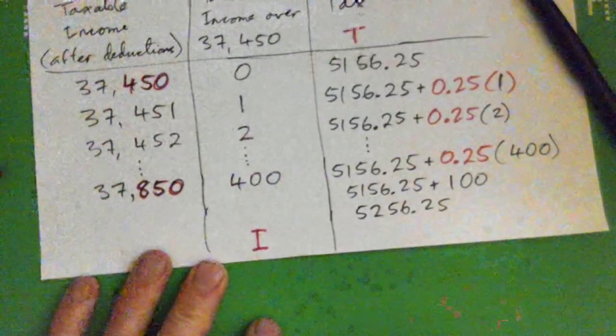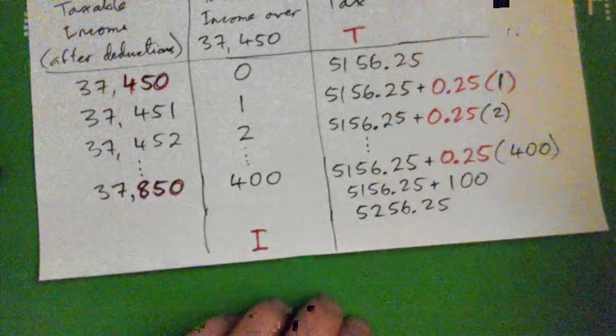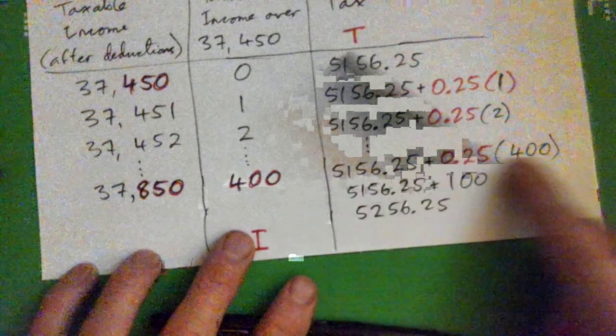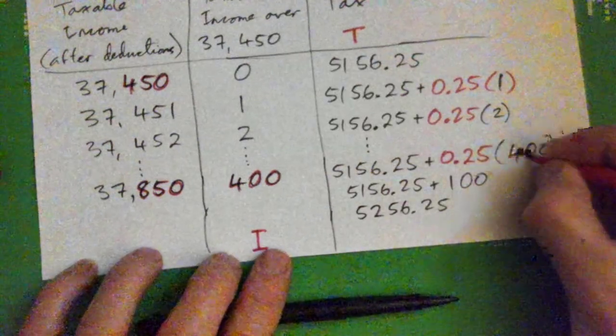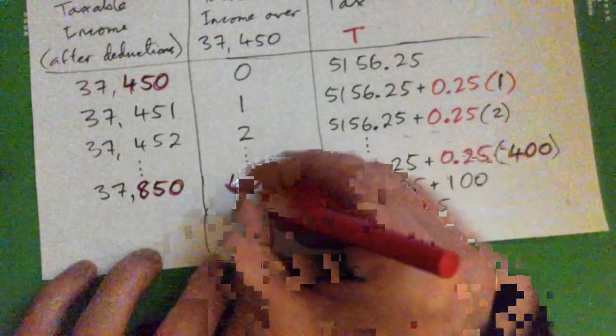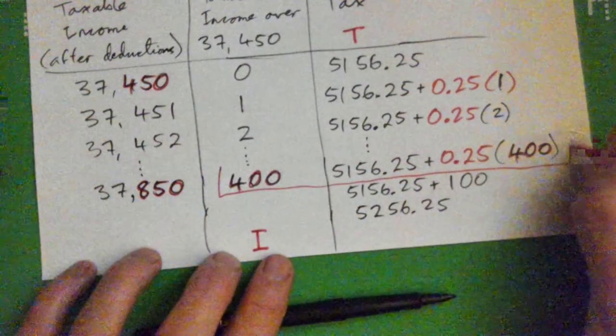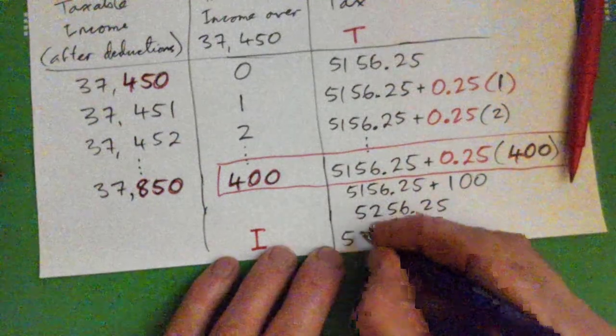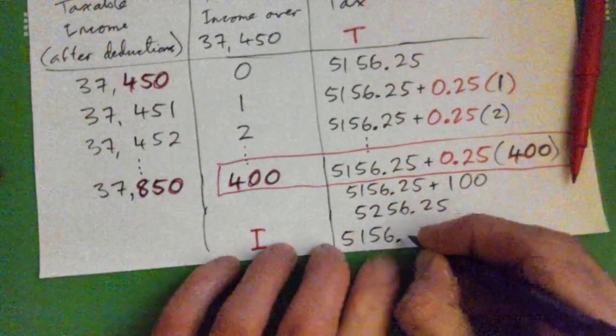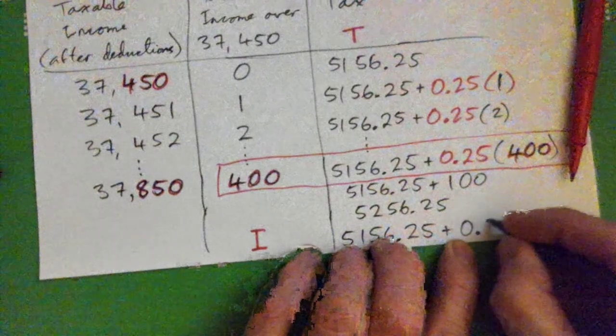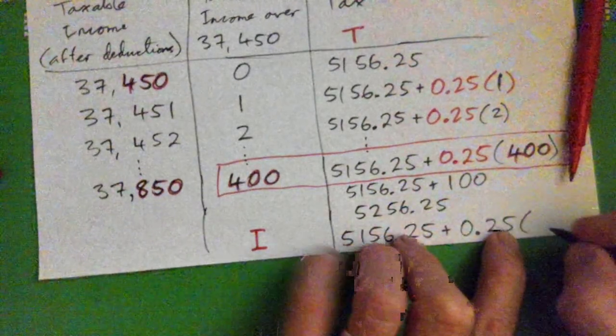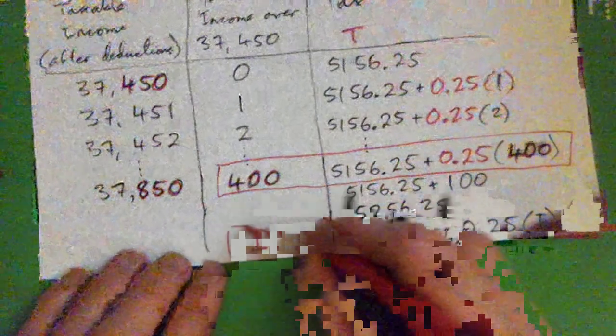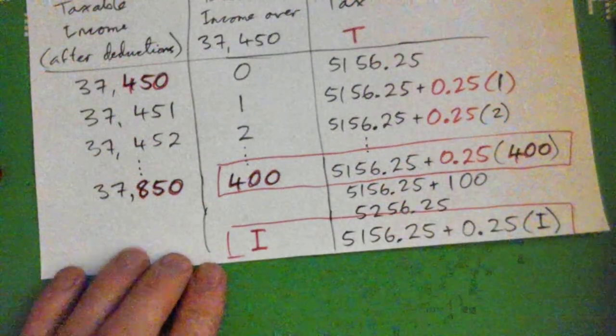They want us to come up with a formula. Remember when it was 400, this was our calculation. When it was 400, so if the amount is i, our calculation is just this: $5,156.25 plus 0.25 times i. Make sense? That's it, that's all it is. That's the formula.